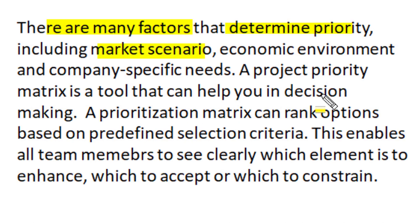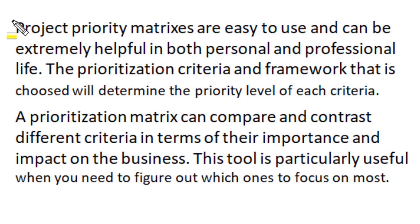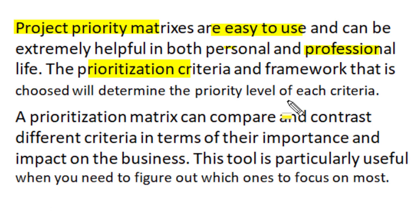There are many factors that determine project priority — whether to enhance, accept or constrain among cost, time and scope. These factors may include market scenario, the surrounding economic environment or company-specific needs. A project priority matrix is a tool that helps project teams in decision making, enabling all team members to clearly see which project element or criteria is to be enhanced, which to be accepted and which to be constrained.